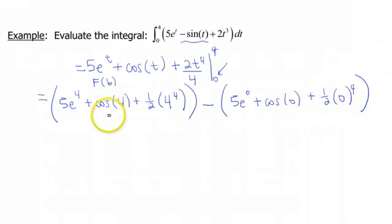All right, so now let's see if we can figure out what any of these numbers are. 5e to the fourth, well, I don't think that one can be simplified much. Same thing with cosine of 4. But I can at least simplify what this number is. So I believe that gives us 128 when I go to do that. Then minus 5 times e to the 0. Remember, anything to the 0 power is 1, so that's gonna give us 5 plus cosine of 0 is 1. Now, that will be plus 0 at the end because anything 0 to the fourth power is 0 times 1 half is just gonna give us 0.